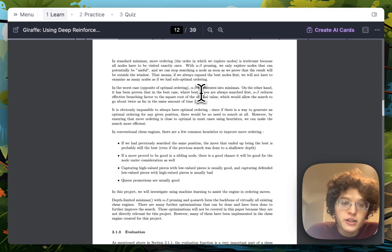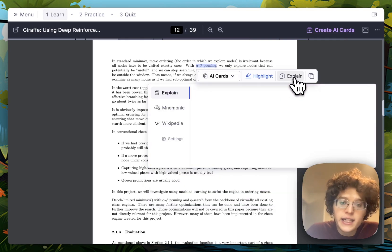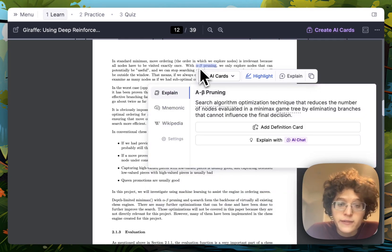If there's some more specific idea that you want to understand, you can just drag to select it instead of clicking it to select the whole sentence. Here, if I drag to select alpha beta pruning, we can see that the cards are focused on the part of the sentence that I selected, and I can click the explain button here to immediately explain whatever term I've selected.